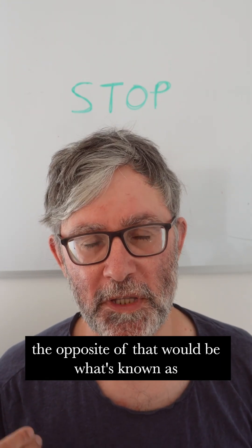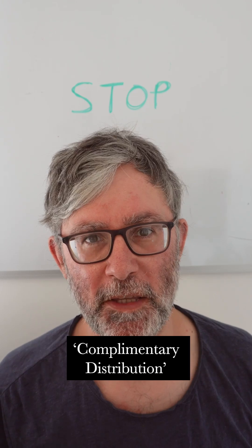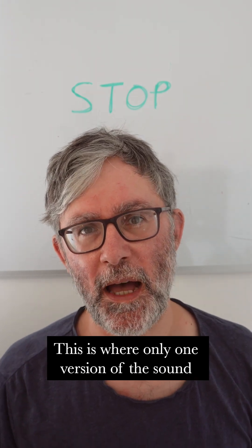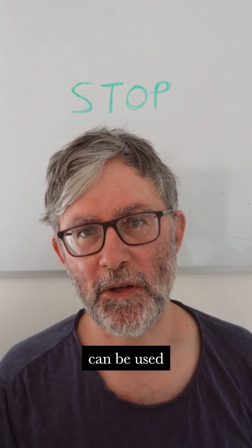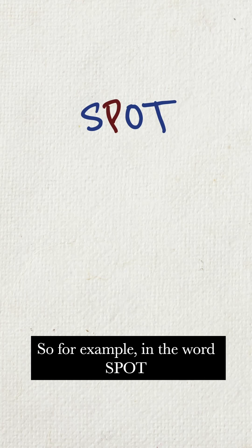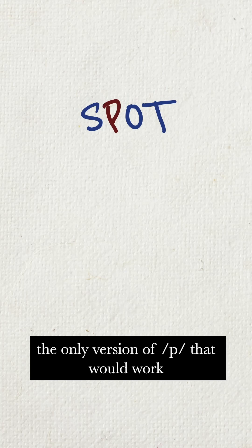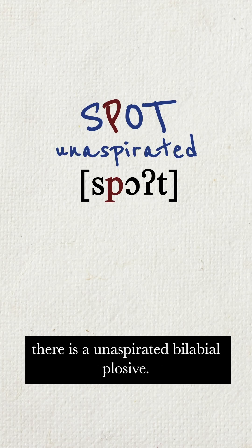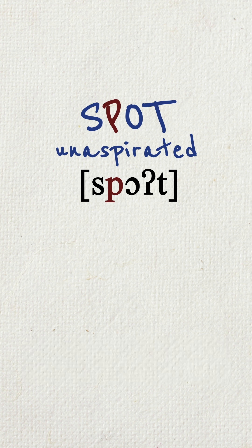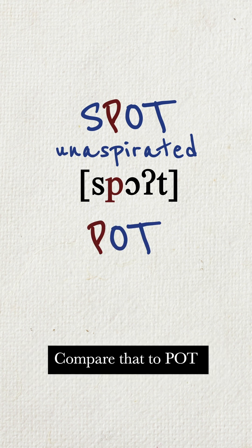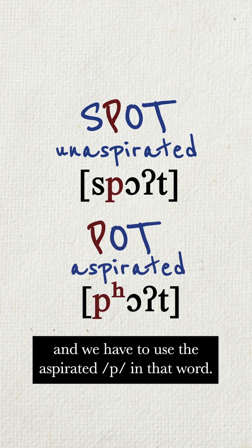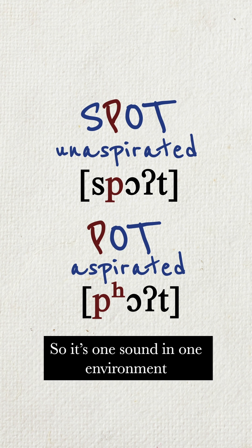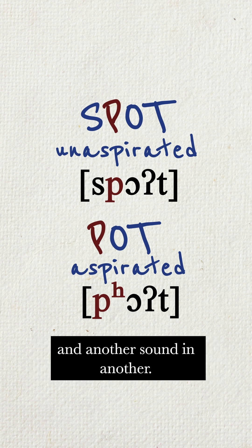The opposite to that would be what's known as complementary distribution. This is where only one version of the sound can be used. So, for example, in the word 'spot,' the only version of a P that would work there is an aspirated bilabial plosive. Compare that to 'pot,' and we have to use the aspirated P in that word. So it's one sound in one environment and another sound in another.